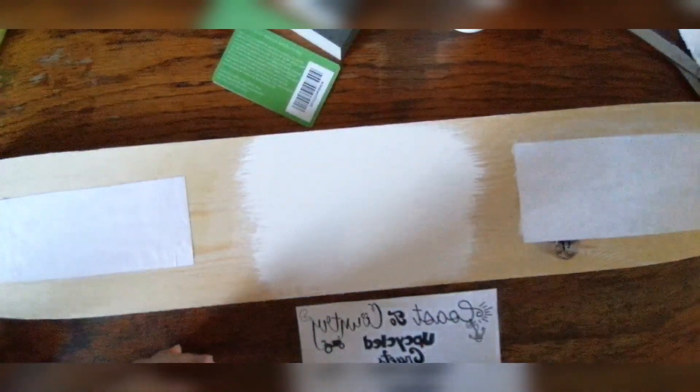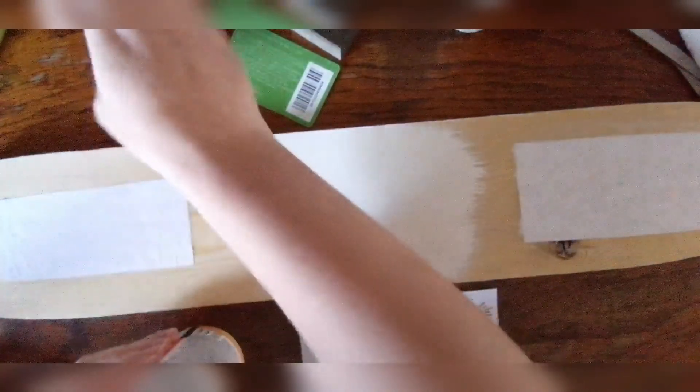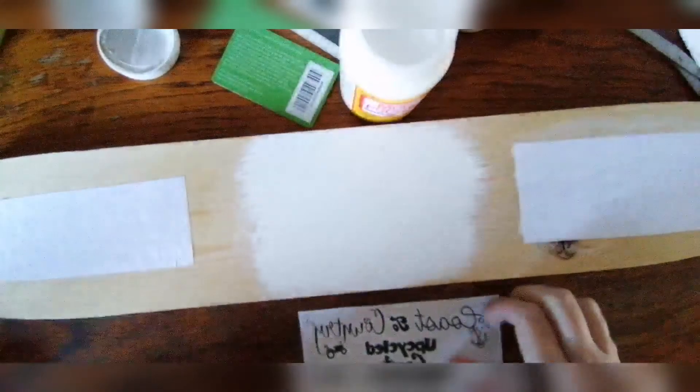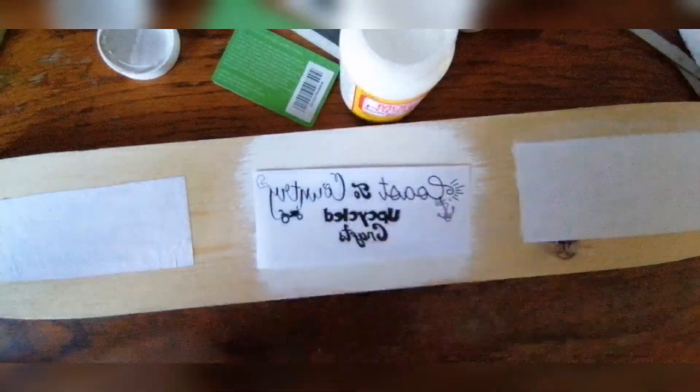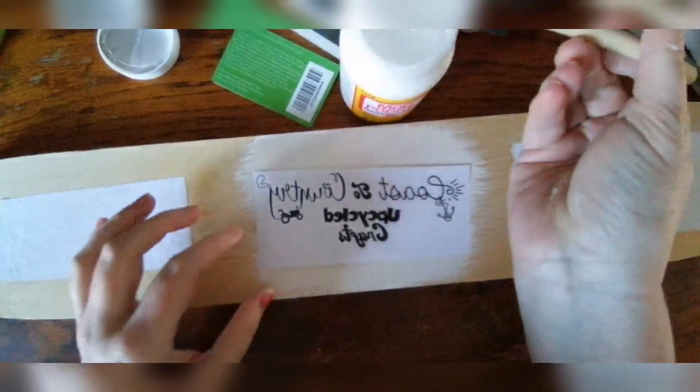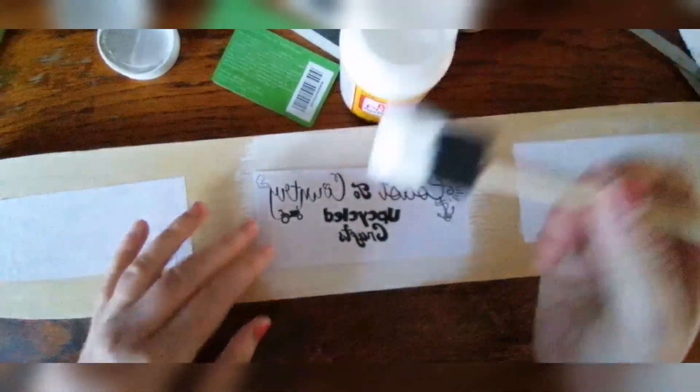Now with this third one again I am going to use the Mod Podge mat because this is what I use mostly across the chalk paint when I am doing my designs and I know this works really well on top of the chalk paint. So again you are going to want to make sure that you have fully covered your graphics with your Mod Podge mat.